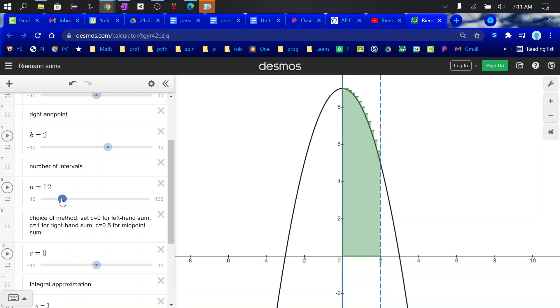Right now I have 12. Let me reduce that to something smaller. There is 2. So this is going to be a left endpoint rectangle approximation.